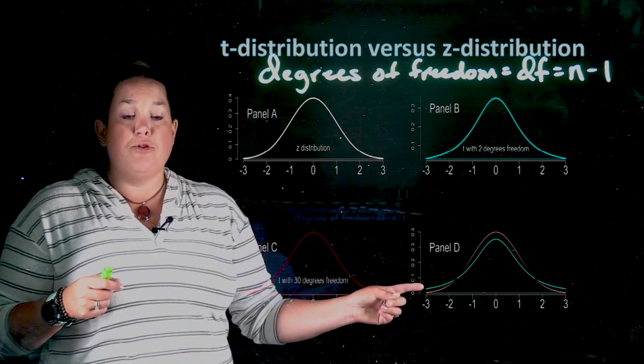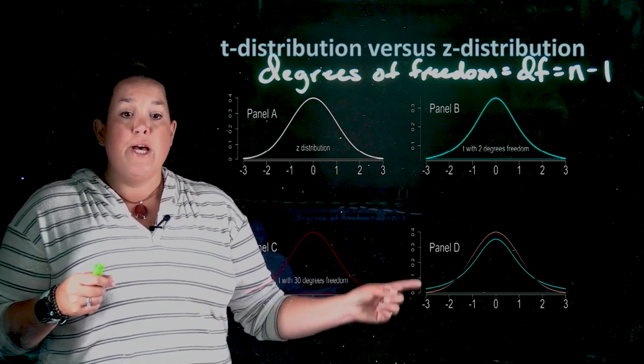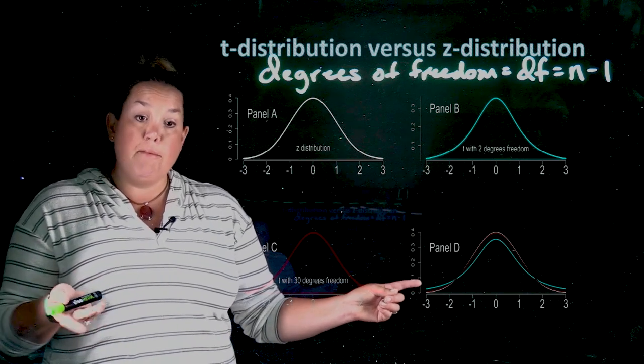the t-distribution, because it's further away from this horizontal line, is showing you that there's more area, which remember equates to more probability in the tails.